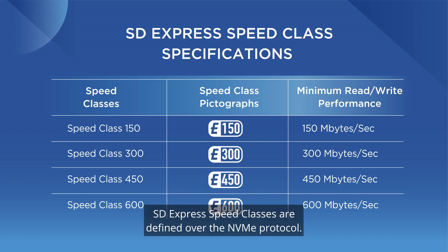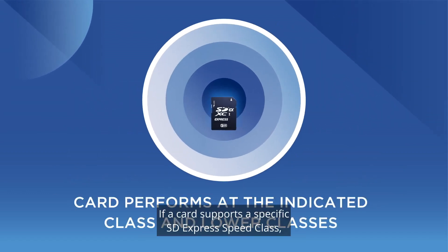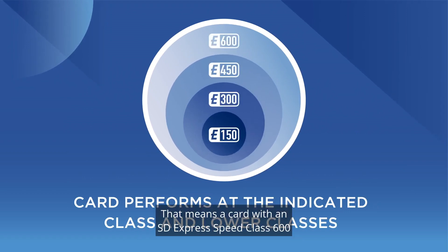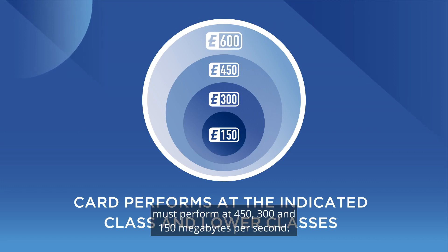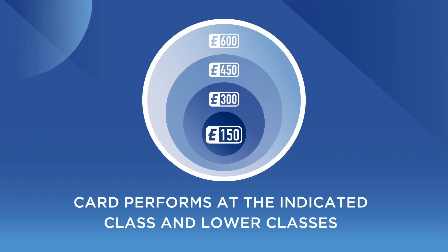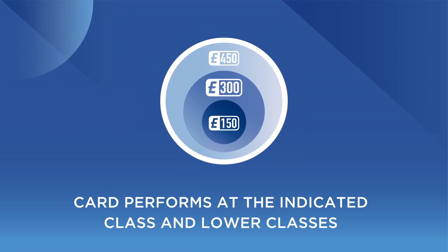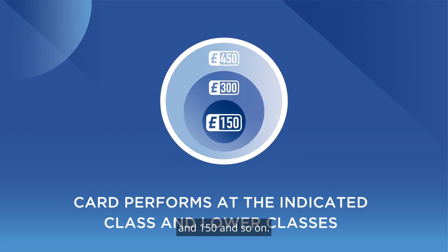SD Express speed classes are defined over the NVMe protocol. If a card supports a specific SD Express speed class, it must also perform at all lower classes. That means a card with an SD Express speed class 600 must perform at 450, 300, and 150 megabytes per second. A 450 card must perform at 300 megabytes per second and 150, and so on.